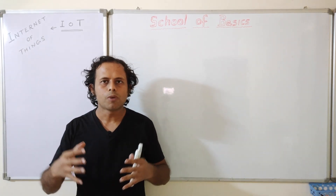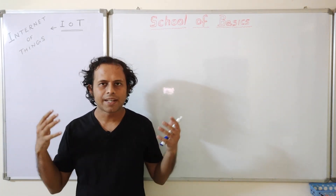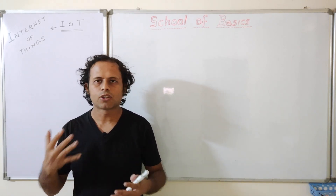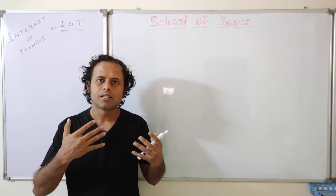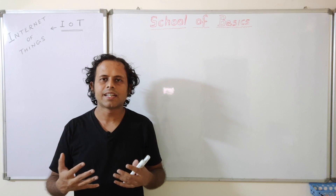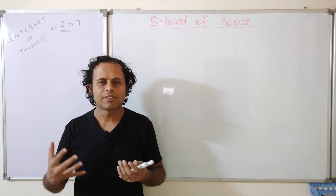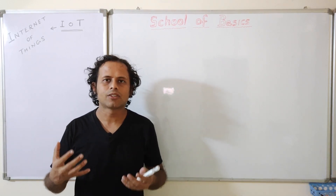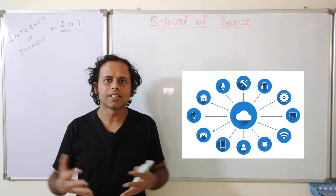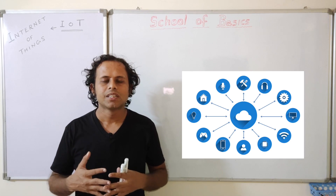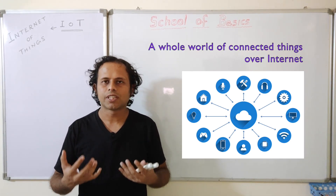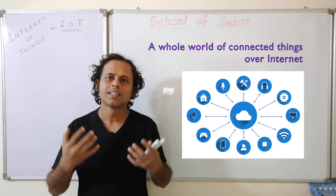Now zoom out of the library and include the entire world — all the things, all the devices, all the equipment: refrigerators, microwaves, healthcare devices — everything in this category, all having sensors or tags. They can talk to each other, communicate, and send information over the network, over the internet. That would be a whole world of connected things, and that exactly is Internet of Things.